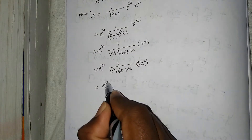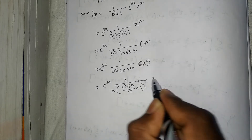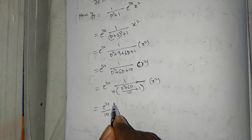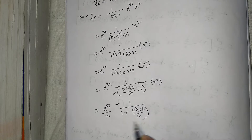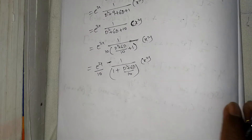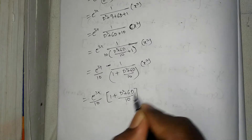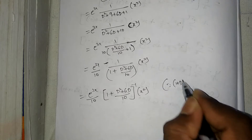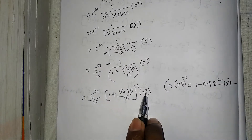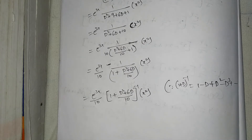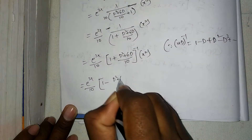Take out 10 as a common factor: yp = (e^(3x)/10) · 1/(1 + (D² + 6D)/10) · x². This equals (e^(3x)/10) · [1 + (D² + 6D)/10]^(-1) · x². Expanding the inverse binomial: (e^(3x)/10) · [1 − (D² + 6D)/10 + ((D² + 6D)/10)² − ...] · x².